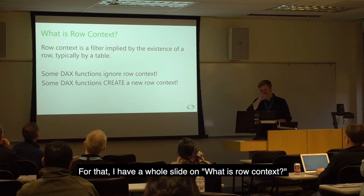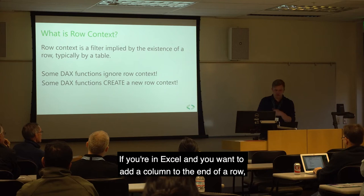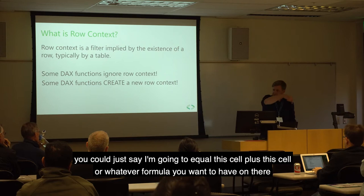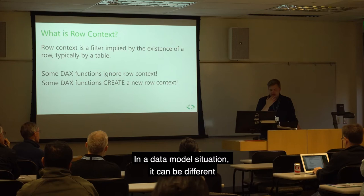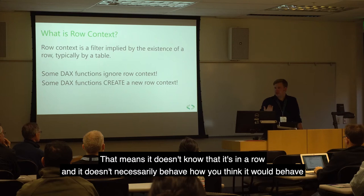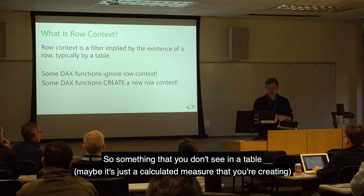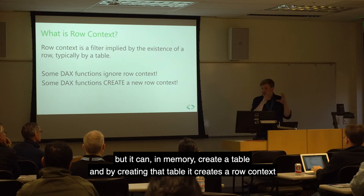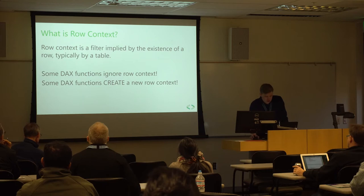Row context is a filter applied by the existence of a row, typically in a table. In Excel this is easily understood — if you add a column to the end of a row, you say equals this cell plus this cell, and it understands you're in a row and calculates for that row. In the data model, it can be different. Some DAX functions ignore row context, and some DAX functions actually create a new row context, creating a table in memory and thus a row context.